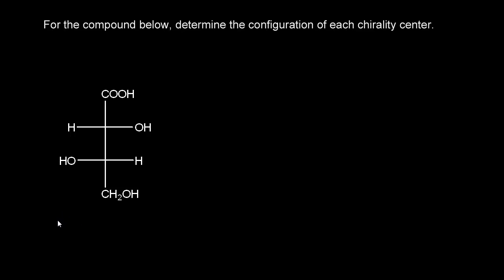In the last video, we looked at a Fischer projection of a compound that had only one chirality center. This molecule has two, and our goal is to determine the configuration of each chirality center. At the intersection of these lines here, we know that this is a chiral center, and then we have another one down here, so those are the two chirality centers.